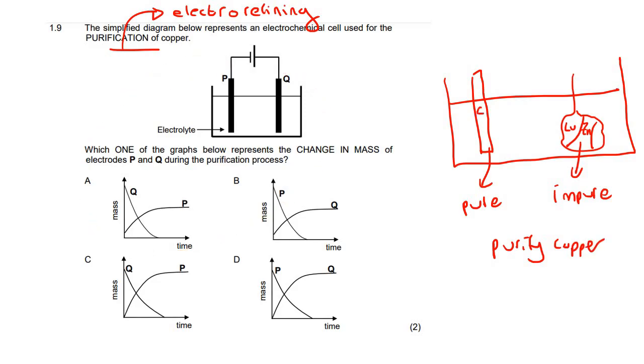So what happens is that this is a pure piece of copper. Let's just say Cu, because that's copper. And so what happens is that if you've watched my videos, you'll know that we try to get this copper over here, over into the solution as an ion, and then it makes its way over, and then it builds up on this side over here.